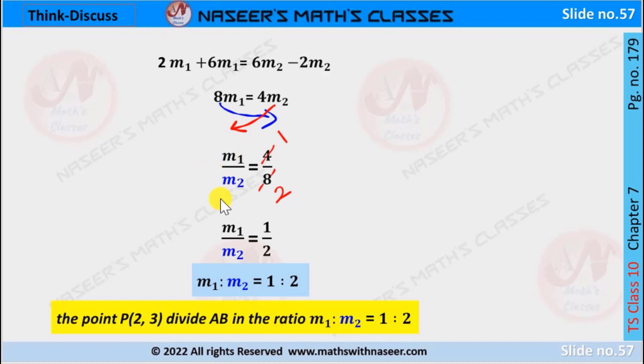Then we can write it as m1/m2 equals 4/8. Now we cancel: 4 ones are 4 and 4 twos are 8, then we get 1/2. Therefore m1/m2 equals 1/2. Now we write in the ratio form as m1 is to m2 equals 1 is to 2. Therefore the point (2,3) divides AB in the ratio m1 is to m2 equals 1 is to 2.